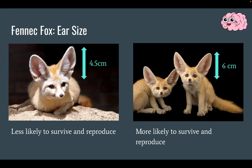The fox on the right is more likely to survive and reproduce. The variety of traits here is ear size, and the fox on the right has a variety that helps it survive. Maybe it can hunt better or cool down more quickly, and because of that, it's more likely to reproduce.